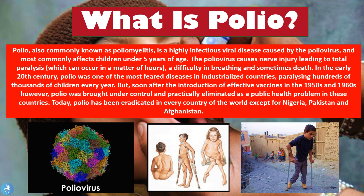So what is polio? Polio, also commonly known as poliomyelitis, is a highly infectious viral disease caused by the poliovirus and most commonly affects children under the age of five. The poliovirus causes severe nerve injury leading to total paralysis, which can occur in a matter of hours, difficulty in breathing, and sometimes even death. In the early 20th century, polio was one of the most feared diseases in industrialized countries, paralyzing hundreds of thousands of children every year.